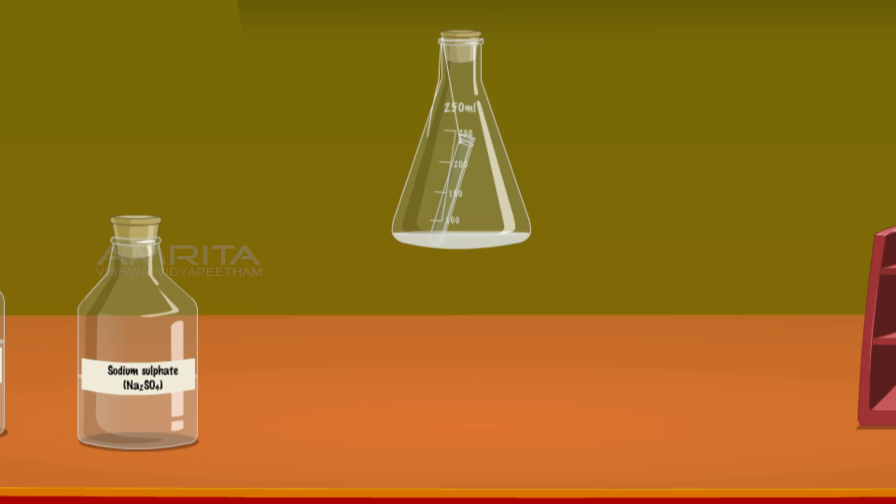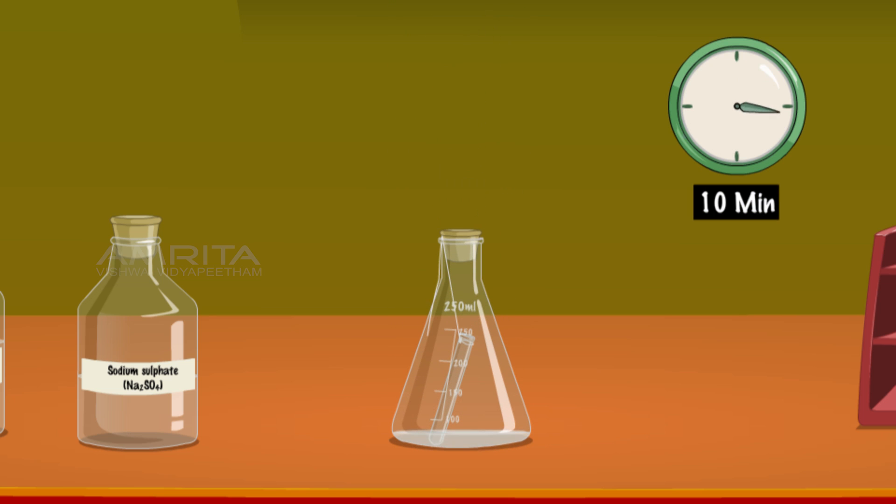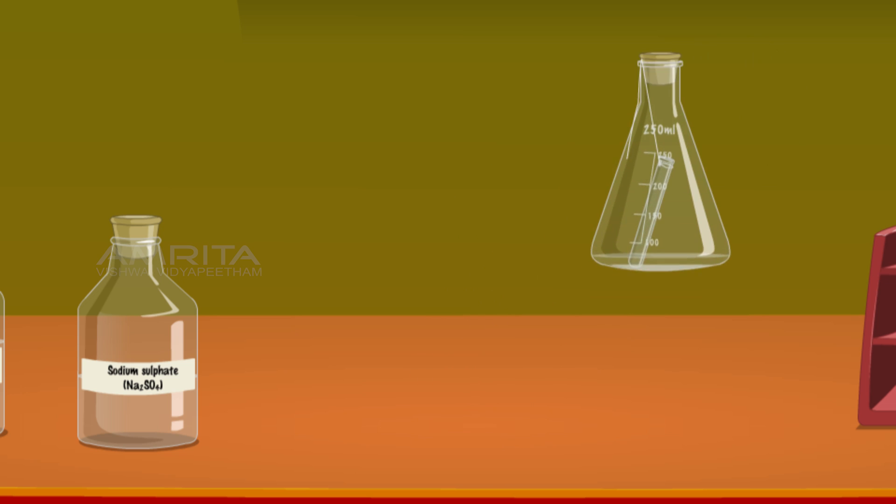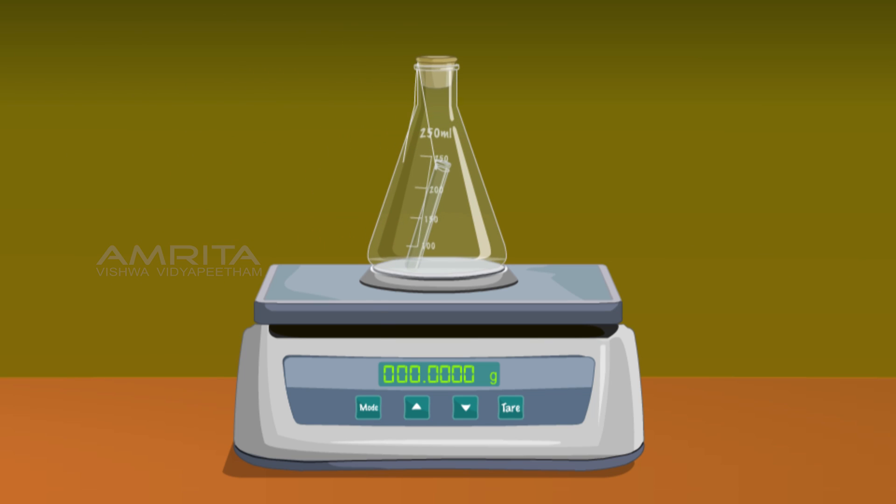Wait for 10 minutes to complete the reaction. The precipitate of barium sulphate settles down to the bottom of the flask. Weigh the contents of the flask again and note down the reading.